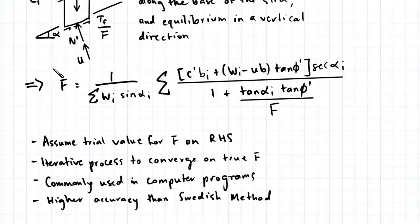The steps which we need to follow in Bishop's method is to first assume a trial value for F on the right hand side, and then through an iterative process, we converge onto the true value of F on the left hand side for a trial circle.